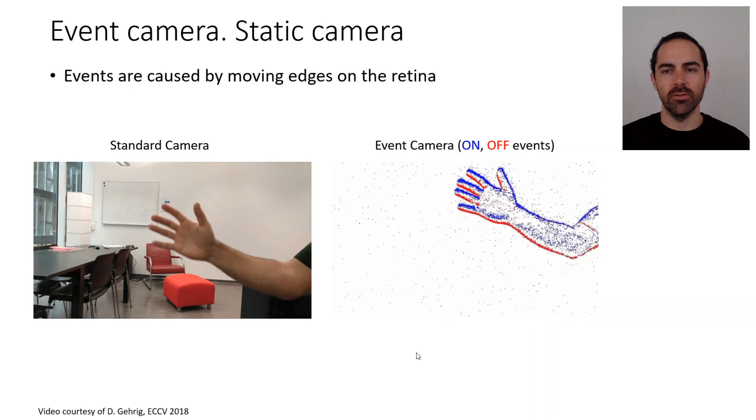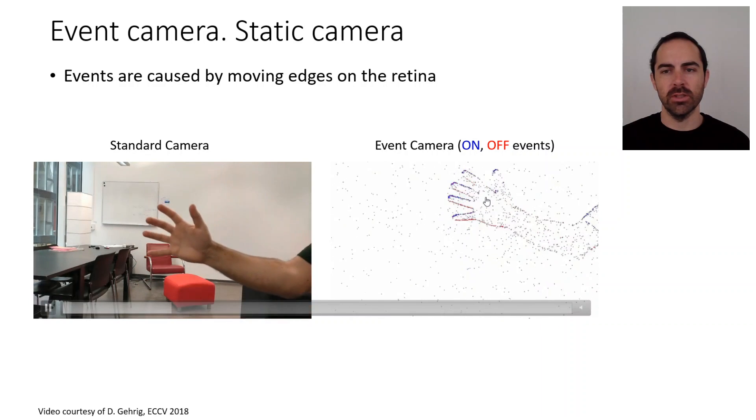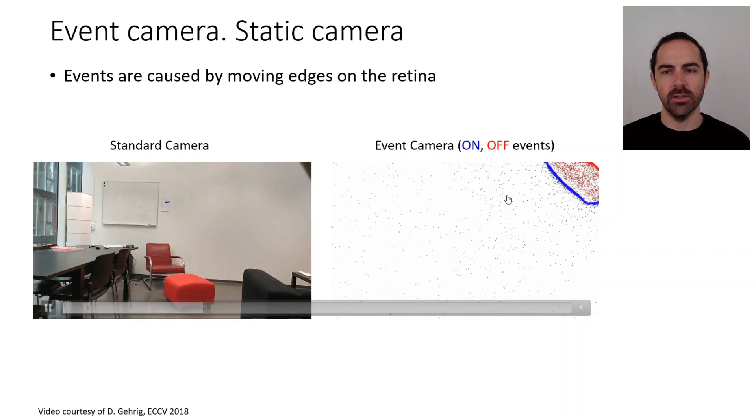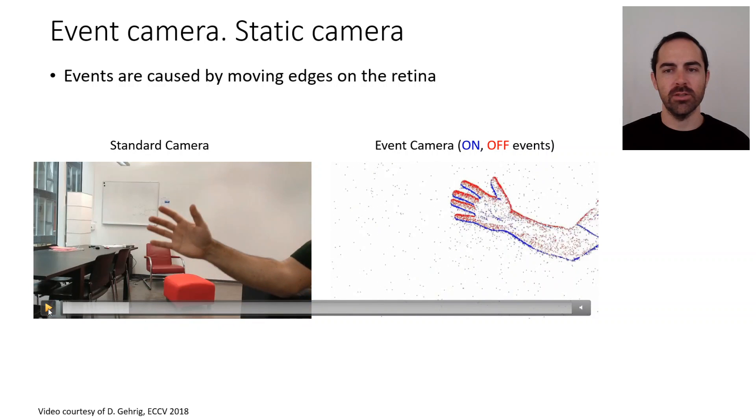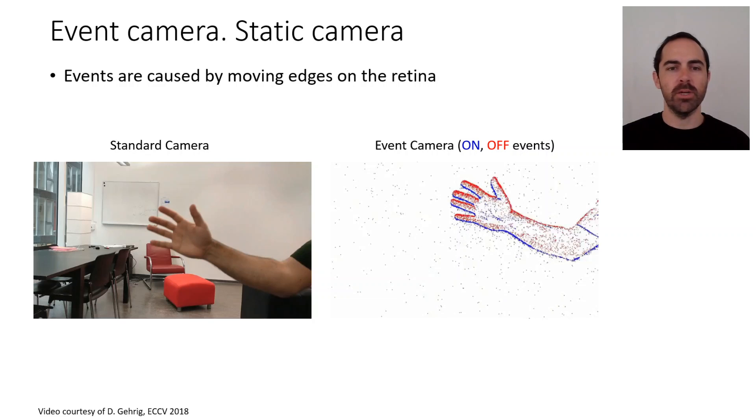We can see there is some background noise and then there is the hand or the arm that is waving in front of the camera, causing these on and off events which are these blue spikes. This is an output that is asynchronous in space-time, but we are visualizing the events by binning them, by collecting them into several millisecond slices and producing an image.